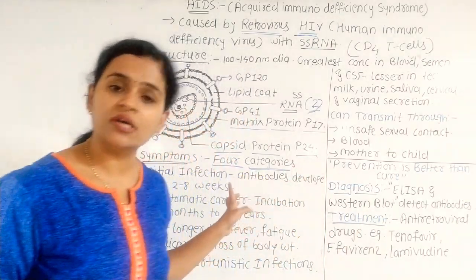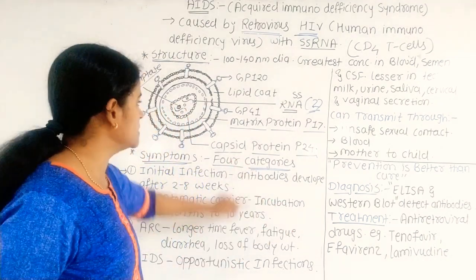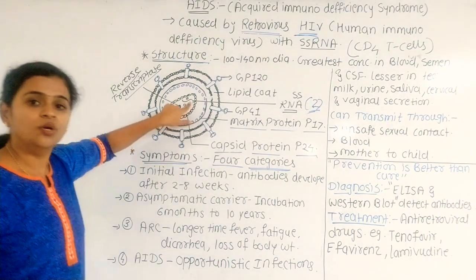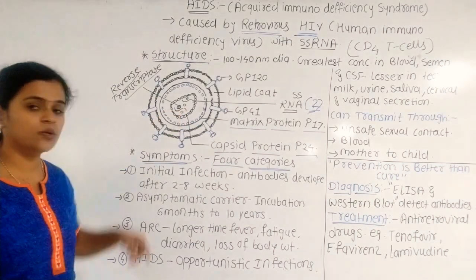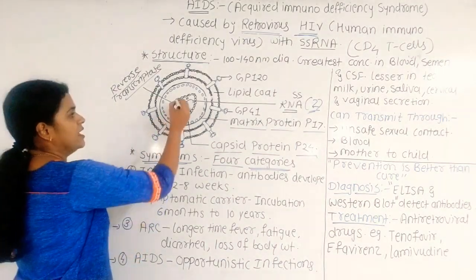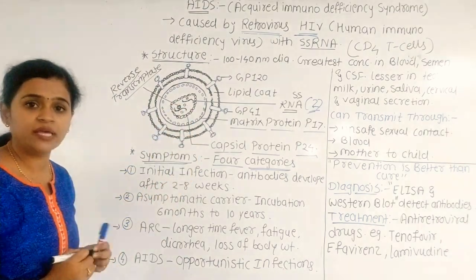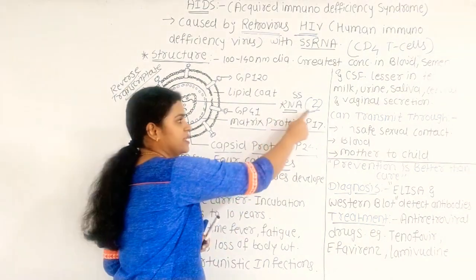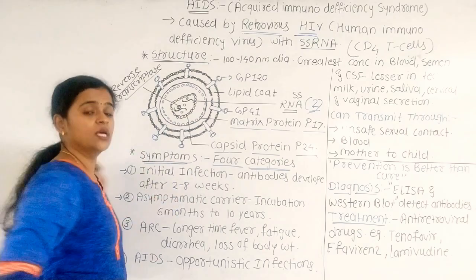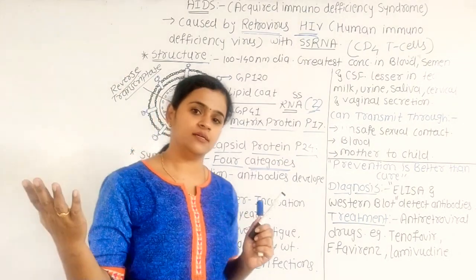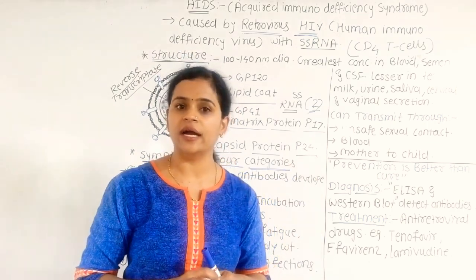I have drawn the diagram of HIV here. In the center of the HIV diagram, you can see single-stranded molecules. In fact, there are two single-stranded molecules in the center — these are the RNA. So there are two RNA molecules here in the center. When HIV is outside in the atmosphere, its genetic material is RNA.